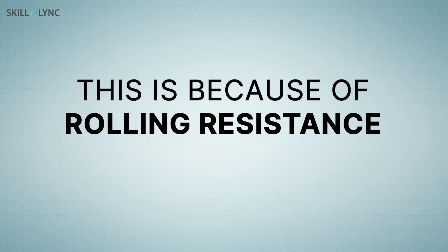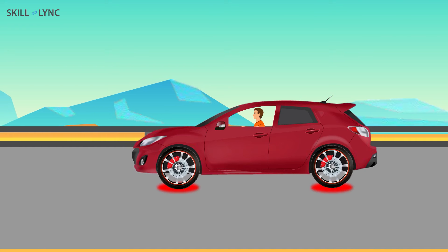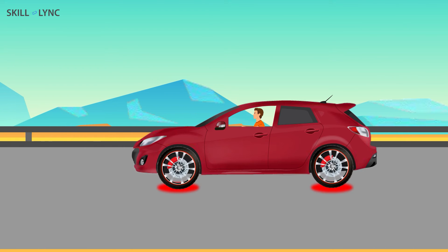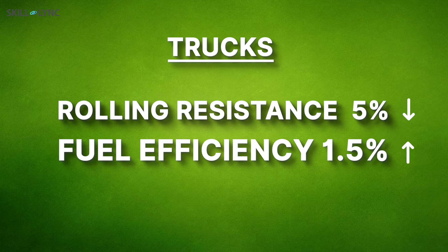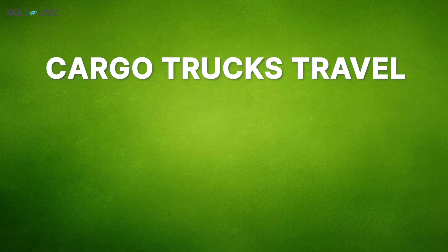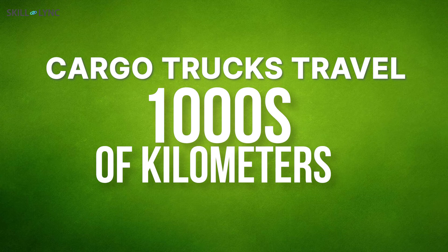Why? This is because of rolling resistance. Rolling resistance acts between the wheels of the car and the surface on which the car is traveling. Almost 4 to 11% of a car's fuel consumption is spent to overcome the rolling resistance between the car tires and the road. For heavy trucks, reducing the rolling resistance of the tires by just 5% can increase the fuel efficiency by 1.5%. This might look like a very small number, but remember cargo trucks travel thousands of kilometers, so any small reduction in fuel consumption will save the truckers a lot of money.